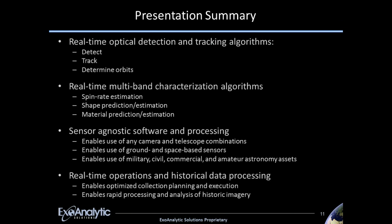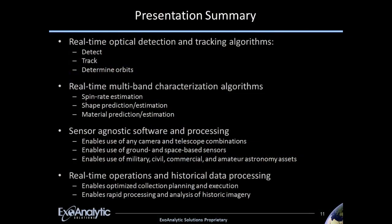Real-time dim object detection, tracking, orbit determination, and real-time characterization from multiple bands. We don't care about the sensor — if you want to use the best Air Force sensors we've done some work on those, very high quality. Or you can go all the way down to the low end of the technology food chain and enable amateur astronomers — we've done that as well, going down to commercial camera lenses and being able to find space objects. In terms of enabling astronomers, we think this is a great opportunity.